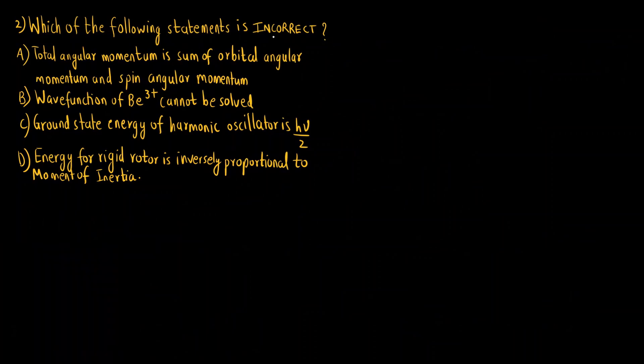Let us see one by one all the options. If you have not read this word incorrect, the first statement that is total angular momentum is the sum of orbital angular momentum and spin angular momentum. This is the correct statement. So if you have not read whether it is correct or incorrect statement is asked you might have marked the first option as correct. This was MCQ which means only one option is the appropriate option. So first statement is correct, so this will not be the correct option because incorrect option is asked.